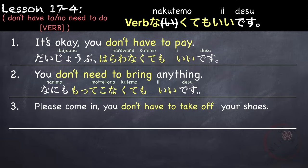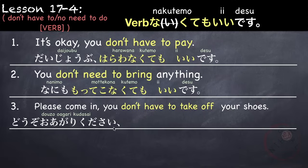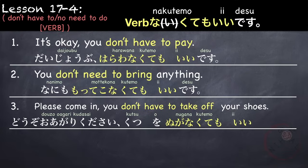'Please come in, you don't have to take off your shoes.' Dozo o agari kudasai — this phrase means please enter. Kutsu wo nuganakute mo ii desu. Our verb is take off — nugimasu — which becomes nuganai, remove i, add nakute mo ii desu. Dozo o agari kudasai, kutsu wo nuganakute mo ii desu.